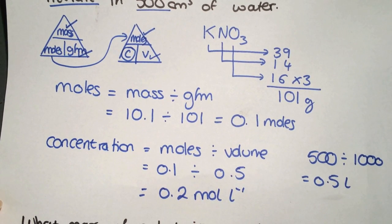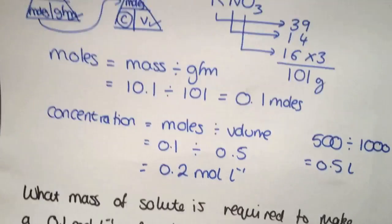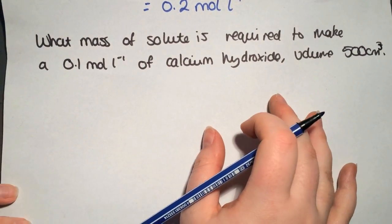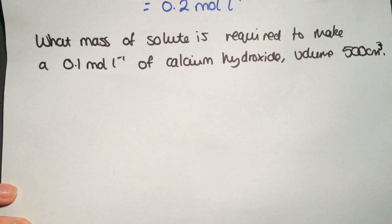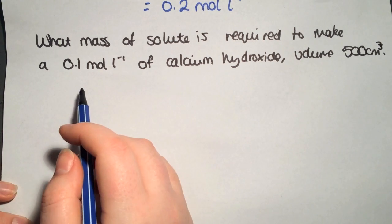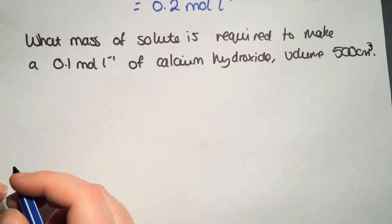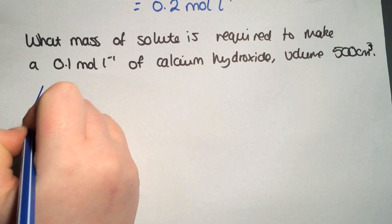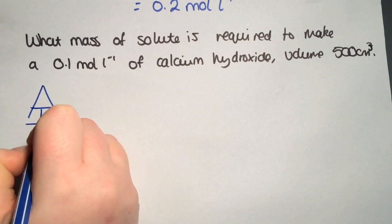Looking at another, possibly more everyday example you would actually do in a laboratory: you know the concentration and volume of the solution you want to make, and you need to work out what mass you would have to weigh out. Again, draw out both of your triangles.